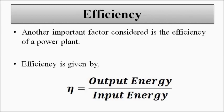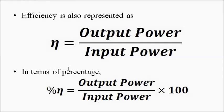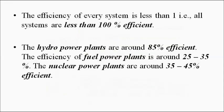Efficiency is a very important factor when considering the output or rating of a power plant. Efficiency is the ratio between the output and the input. In terms of energy, efficiency equals output energy divided by input energy. Since power is the rate of energy flow, we can also write efficiency as output power divided by input power, and as a percentage it is output power divided by input power times 100.